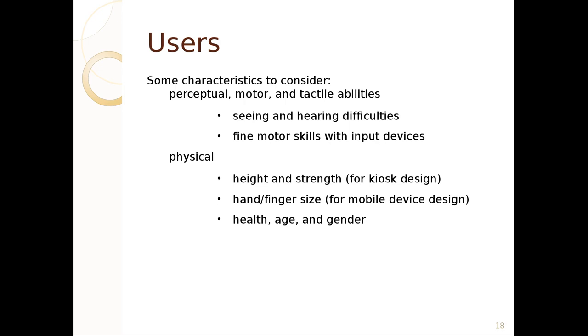There might be physical limitations. For instance, a kiosk at a museum for children might have to be quite low. A kiosk at a museum that is attended by the rest of the public might have to be a little bit higher. You might consider different hand-finger sizes. So if you make a mobile device, you might consider making a version of it that's a lot larger for people with very large hands. You might also consider the health and age and gender of the population that you're dealing with.